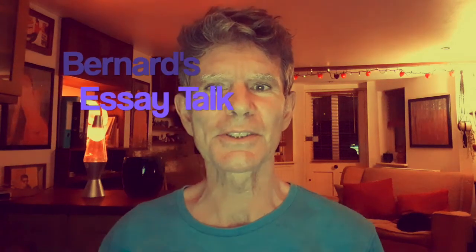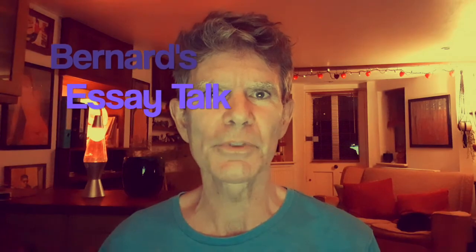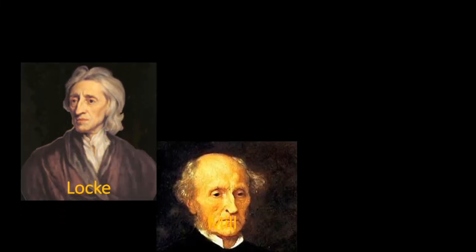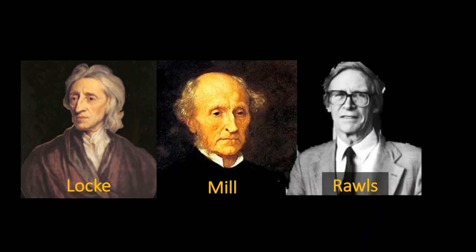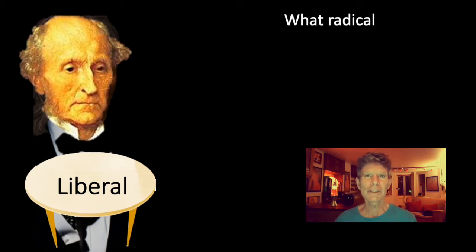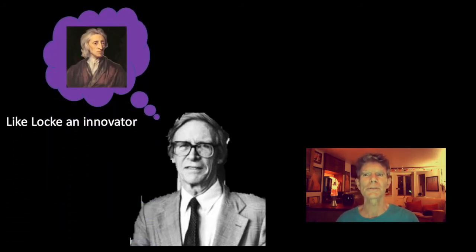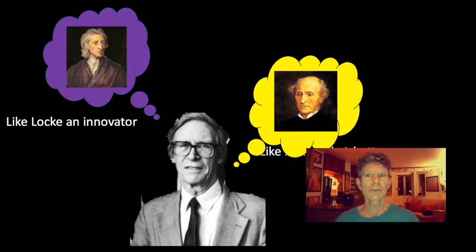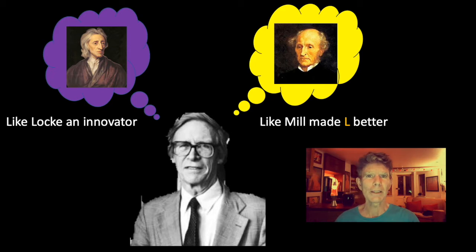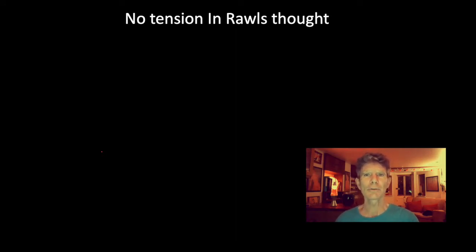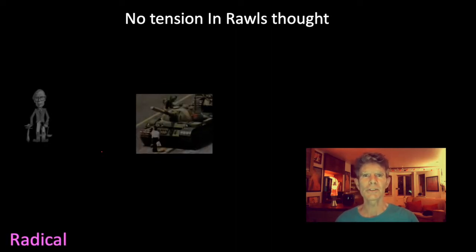Hi, welcome to Bernard's Essay Talk and the fourth of this four-film series, looking at the liberalism of Locke, Mill and John Rawls. In the last film, I looked at Mill — what he brought to the liberal table, what was radical in his thinking, what was conservative, and how he fitted into the wider liberal philosophy. In this film, I'm going to do something similar with John Rawls, who, like Locke, was an innovator bringing something new to liberalism, and also, like Mill, took existing liberalism and made it better. But unlike Locke and Mill, there's no tension in Rawls' thought between a radical or conservative instinct, because Rawls had no conservative instinct, and his liberalism was consistently radical.